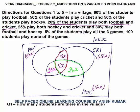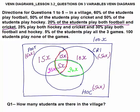Now we fill the remaining parts. The cricket circle must total 50x. The filled parts are 15 + 5 + 20 = 40x, so cricket-only is 10x. The football circle must total 60x. The filled parts are 25 + 5 + 15 = 45x, so football-only is 15x. The hockey circle must total 50x. The filled parts are 25 + 5 + 20 = 50x, so hockey-only is 0.